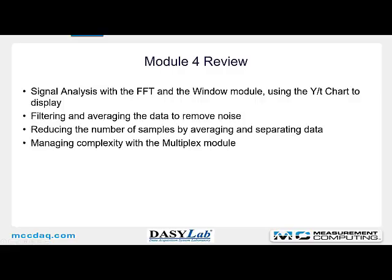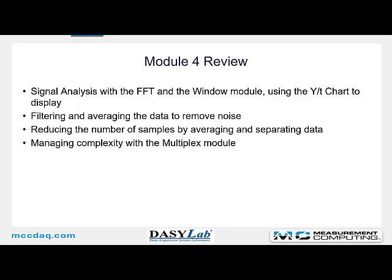To review: we've looked at the signal analysis functions in DAISYLAB using the FFT and the window module, and used the YT chart to display the data. We also used the statistics module to pull out the peak frequency. We filtered and averaged the data to remove noise, reduced the total number of samples by averaging and separating, and looked at managing worksheet complexity with the multiplex module. Module 5 will tackle visualization and making the display look nice, covering layouts, controlling layouts, and then moving into DAISYLAB global variables and strings.